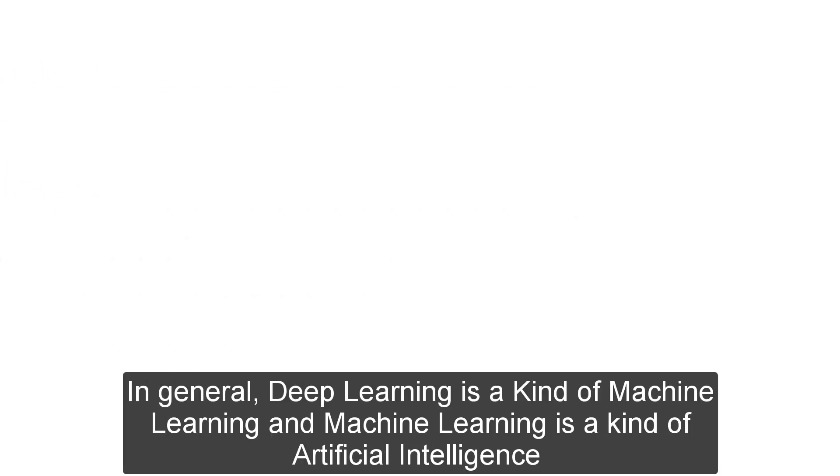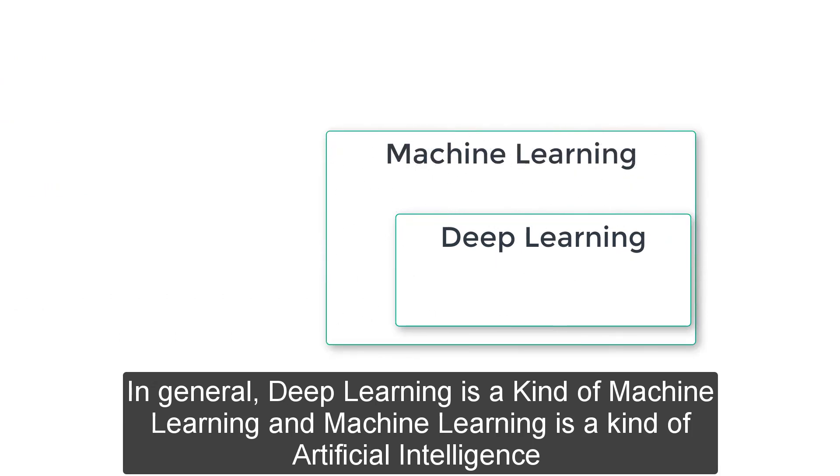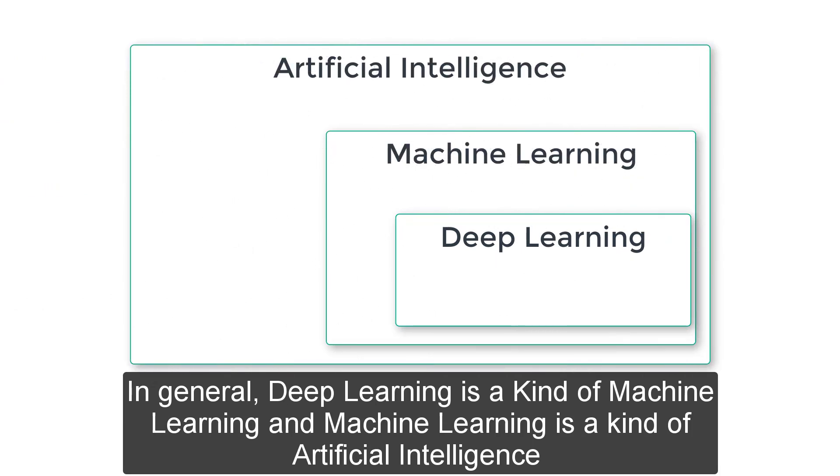In general, deep learning is a kind of machine learning, and machine learning is a kind of artificial intelligence.